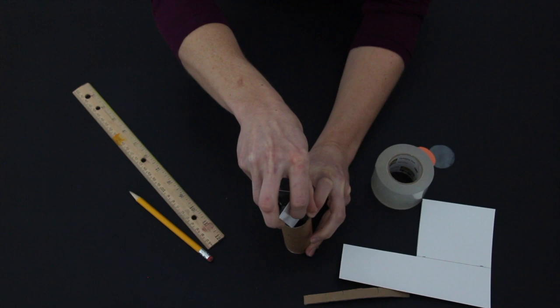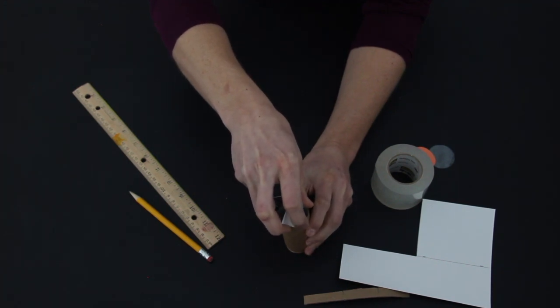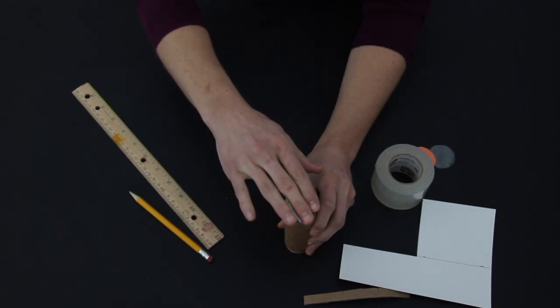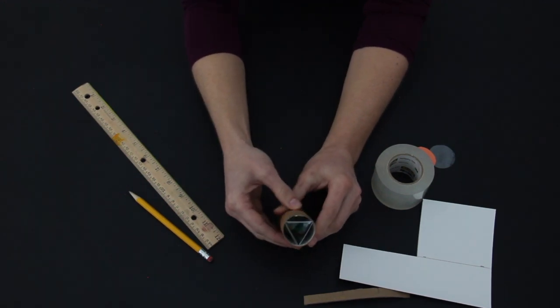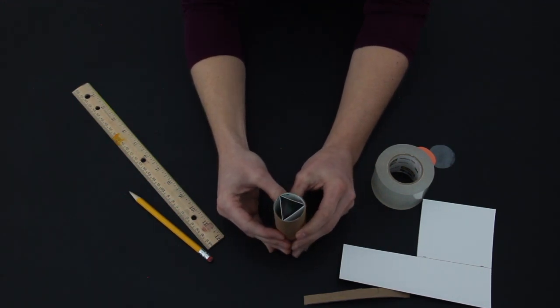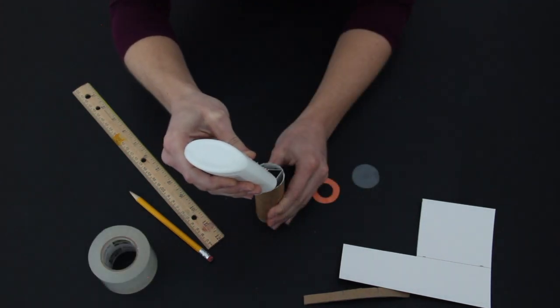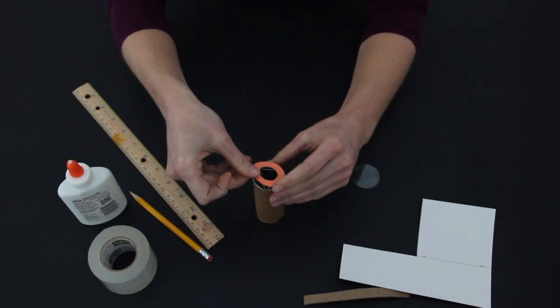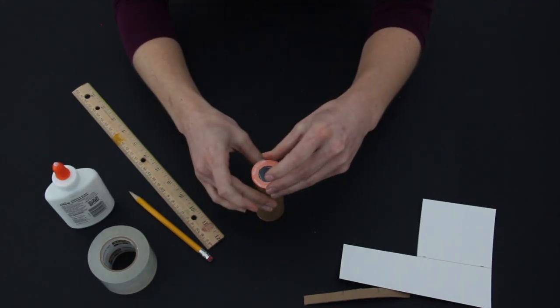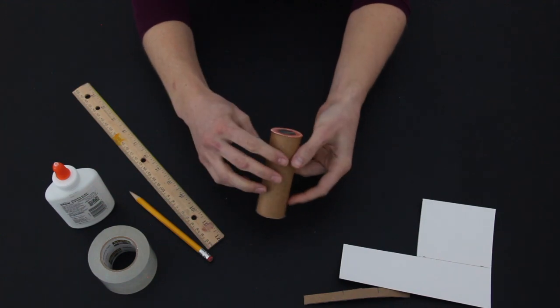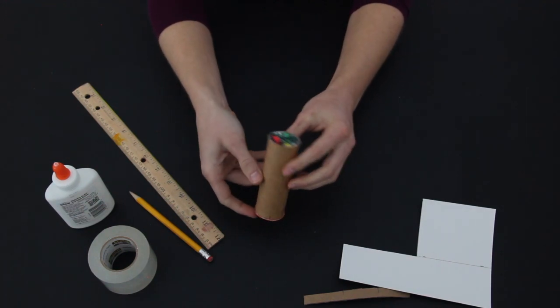Use the protractor to measure the angle of the triangle and write this number down. We're going to have students explore what happens when you change this angle in a little bit. Let's get back to the kaleidoscope. Put some glue on the edge of the tube at the B end. Attach the paper circle with the hole in the center and cover it with the last large transparent circle. Your kaleidoscope is ready to use.